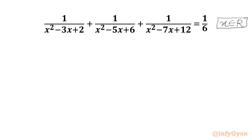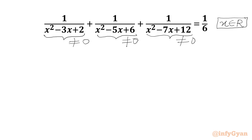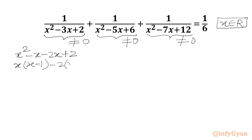Let's get started by writing our denominators — each cannot be 0. Now we have to factor our denominators. I will split the middle term: x² - 3x can be split as -x - 2x, then plus 2. Taking x common from the first two terms gives x(x-1), and taking -2 common from the last two gives -2(x-1). So the factorization is (x-1)(x-2).